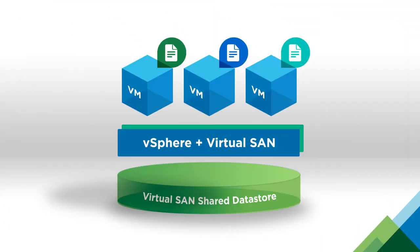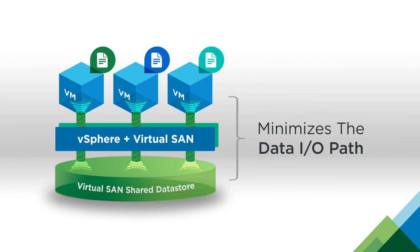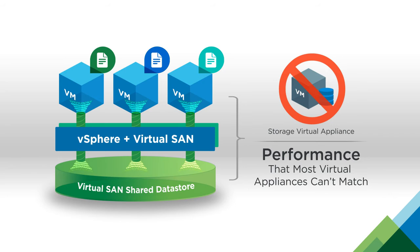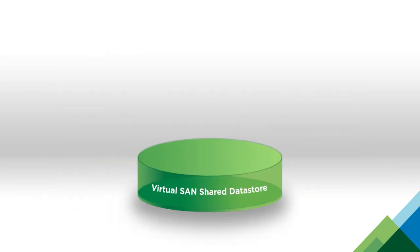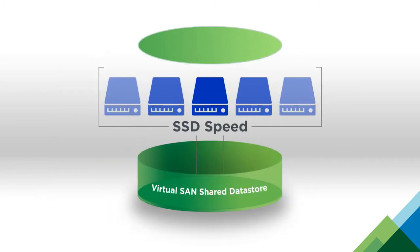Because it's embedded inside the ESXi kernel, Virtual SAN minimizes the data I/O path, delivering performance that most virtual appliances can't match. For even greater speed, Virtual SAN uses the flash pool as a storage cache.